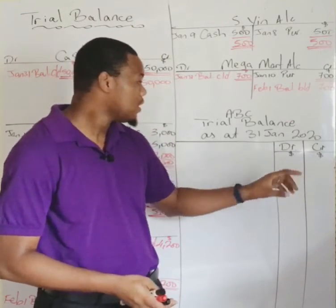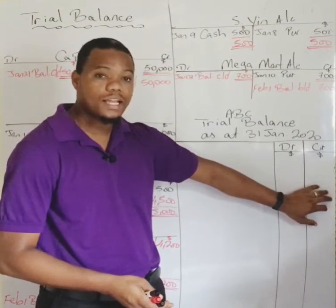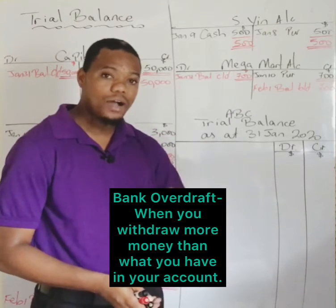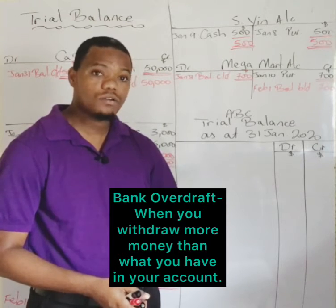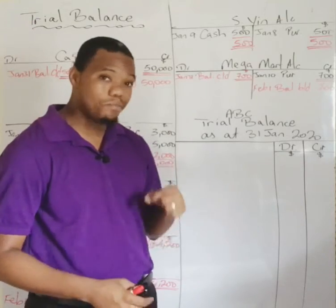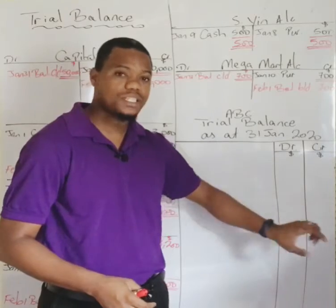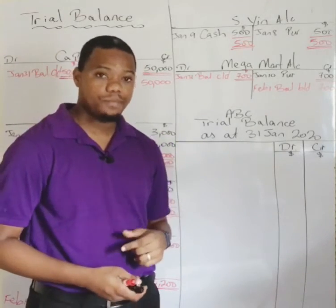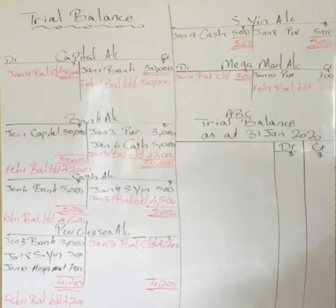One exception is the bank account, which can actually have a credit balance when there is a bank overdraft. A bank overdraft is a service provided by the bank whereby they allow a customer to withdraw more money than they have, so in that case the bank account will have a credit balance. This is rare but important to know.